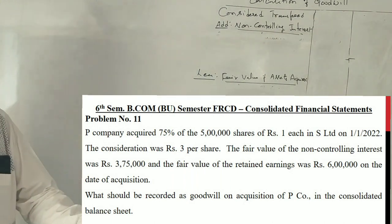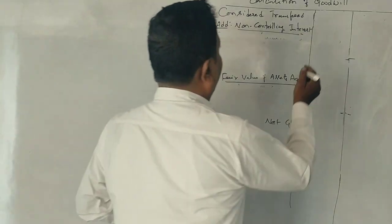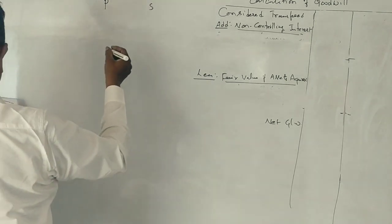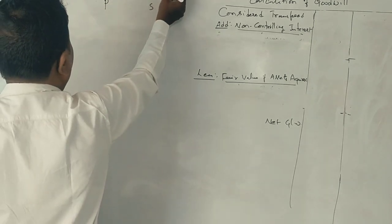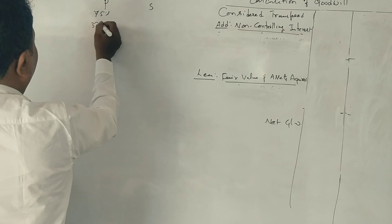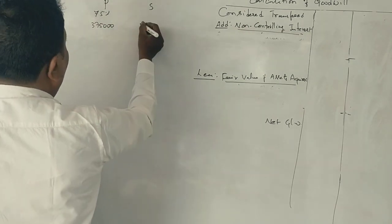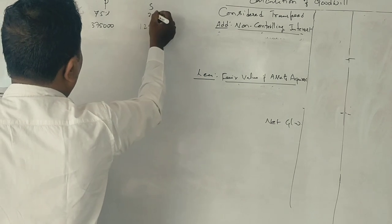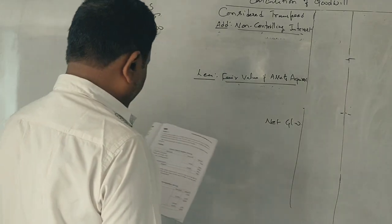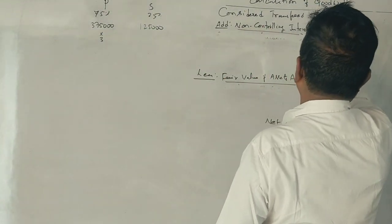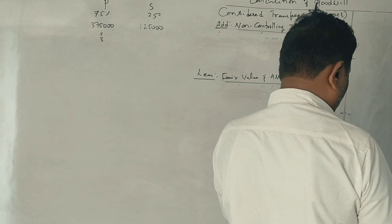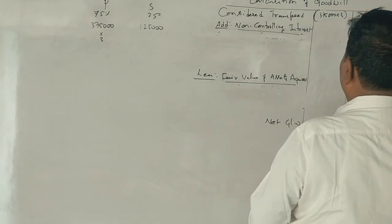We start with 5 lakh shares of S Company. P Company purchased 75% of these shares, which is 3,75,000 shares. The remaining 25% non-controlling interest is 1,25,000 shares. The consideration is 3,75,000 shares multiplied by Rs. 3 per share, which equals Rs. 11,25,000 as consideration transferred.